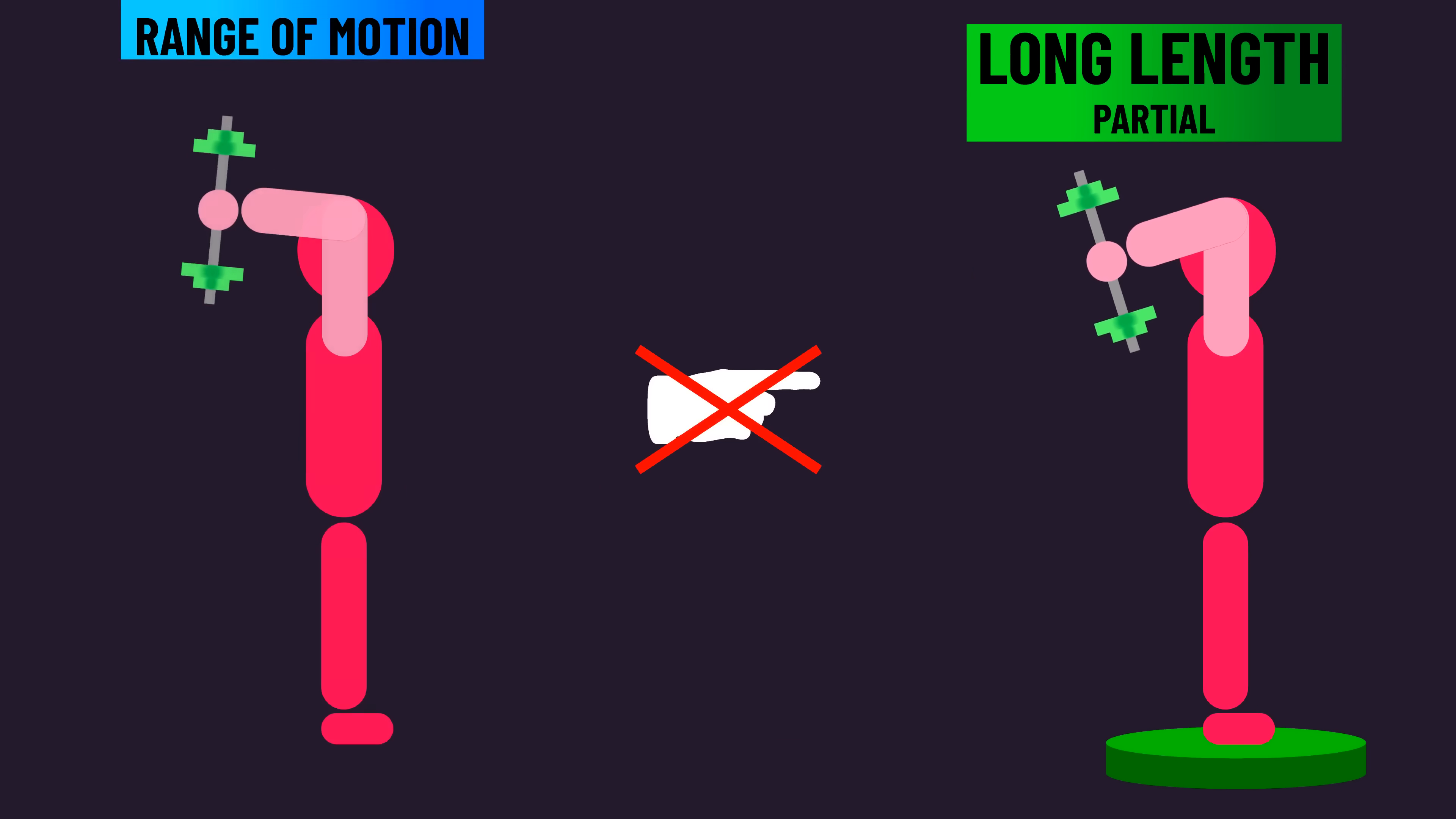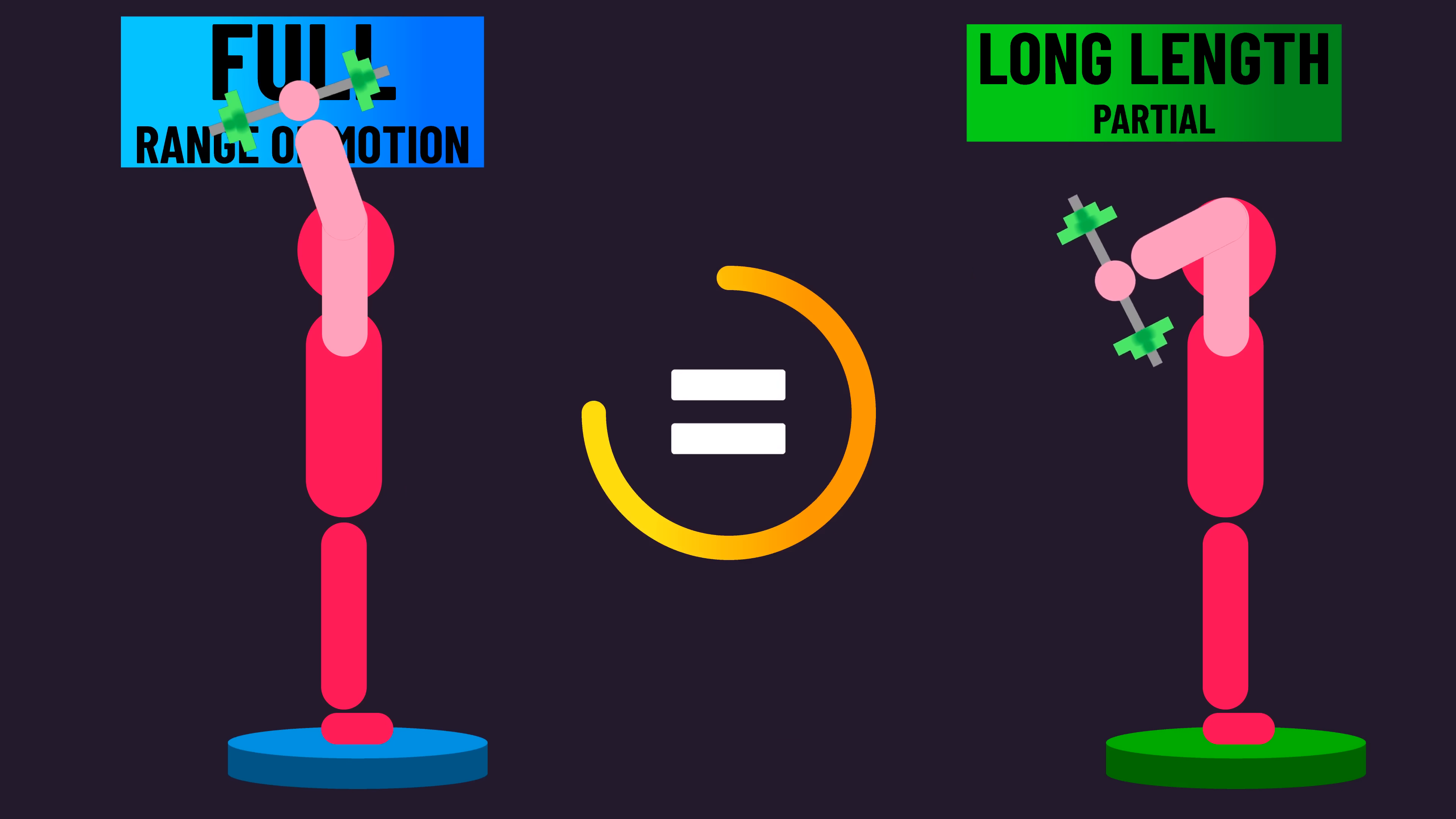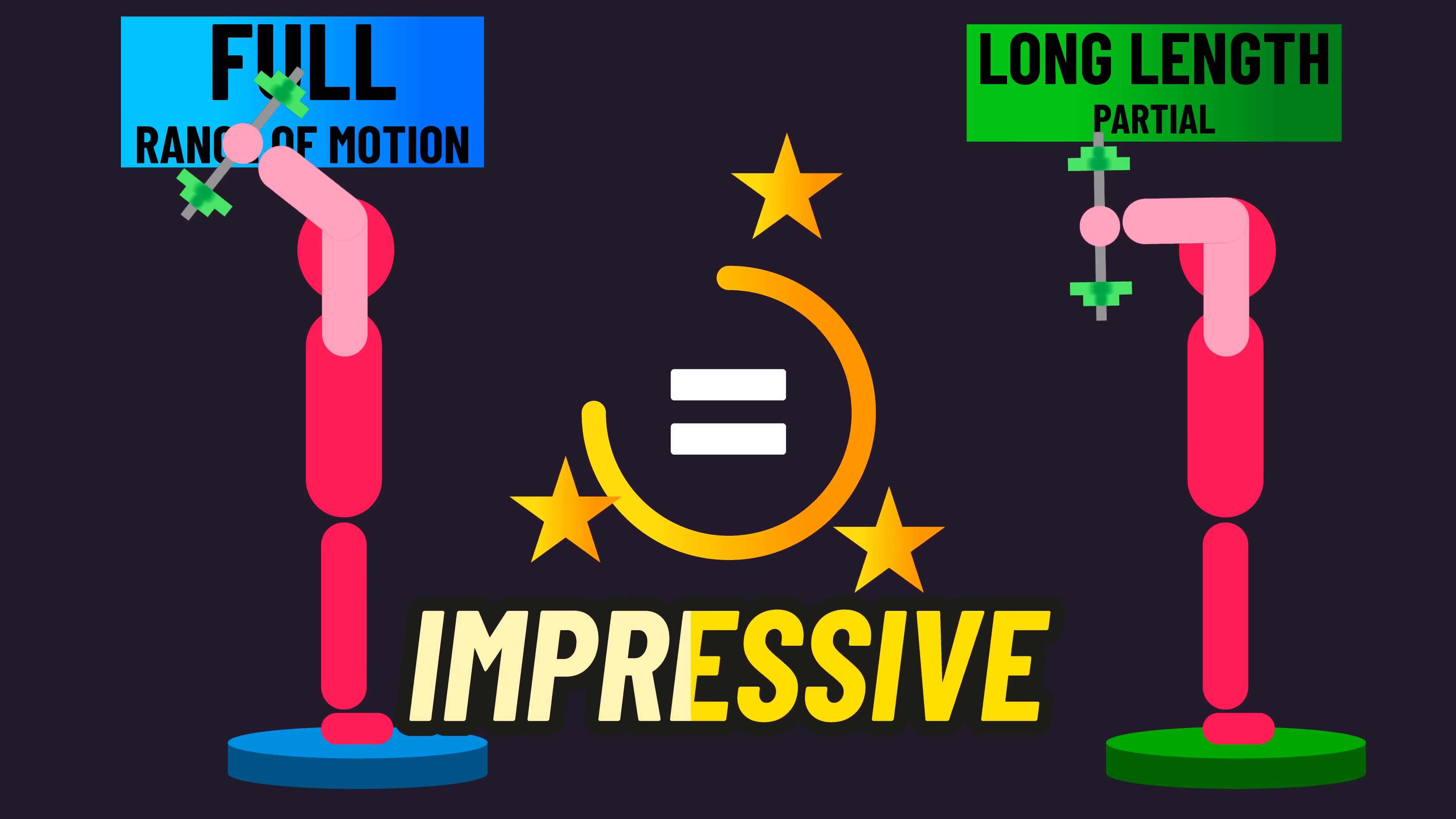Thus, partials at long lengths weren't any better than a full range of motion, but it wasn't any worse, which I believe is still a very impressive finding.